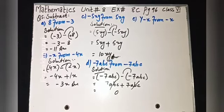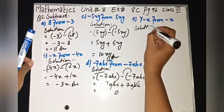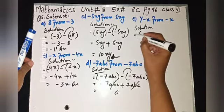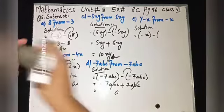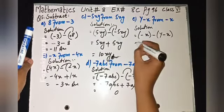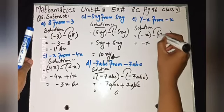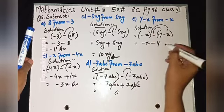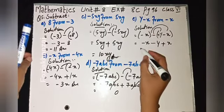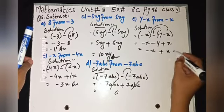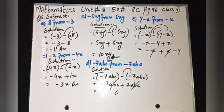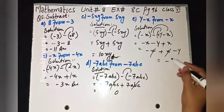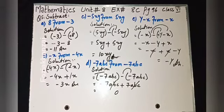Question number five, last part e: subtract minus x from minus xy minus x. After 'from', copy first: minus x minus y. Remove round bracket: minus x minus plus minus y gives minus y, and minus minus plus x. Write like terms together: minus x plus x — same variable with opposite sign, they cancel. Minus y is left, so minus y is the answer for part e.